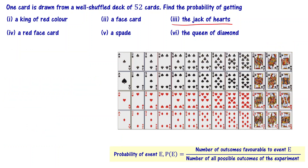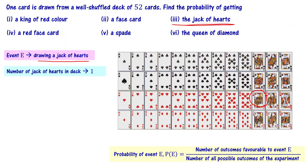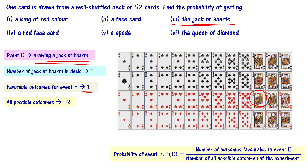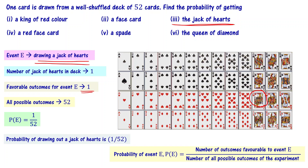Now, let's look at what is the probability of getting the jack of hearts. Event E is drawing a jack of hearts — a card that has both a jack and a heart symbol. Among all the cards, only one card has the jack of hearts. So, the number of favorable outcomes is 1, and all possible outcomes is 52. The probability is 1 divided by 52. The probability of drawing a jack of hearts is 1 by 52.